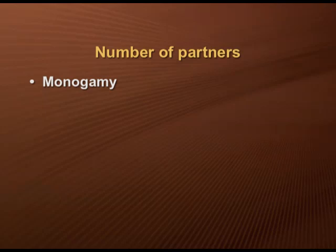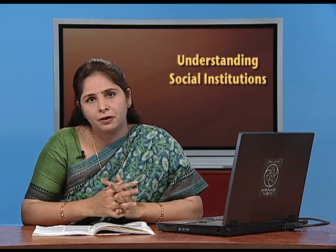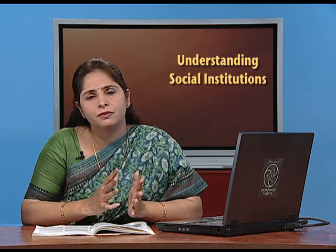Let us discuss marriage as a social institution. Marriage can be classified on the basis of the number of partners one can have in the matrimony and the rules governing who can marry whom. Regarding the number of partners, there are two groups: monogamy, which restricts an individual to one spouse at a time, and polygamy, where one can have two or more partners. Within polygamy, there are two classifications: polygyny — one husband with two or more wives — and polyandry — one wife with two or more husbands. There is also the concept of serial monogamy, where after the death of a partner or after divorce, one can again enter into matrimony and marry another person.